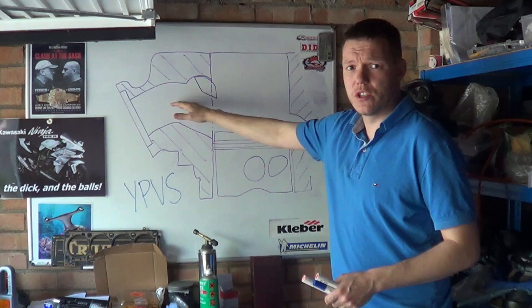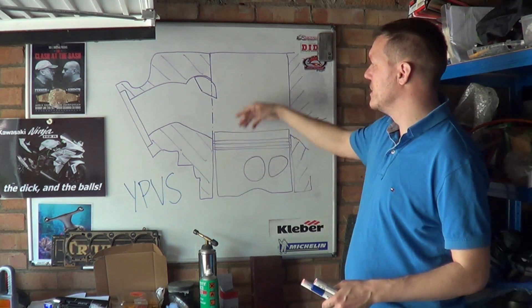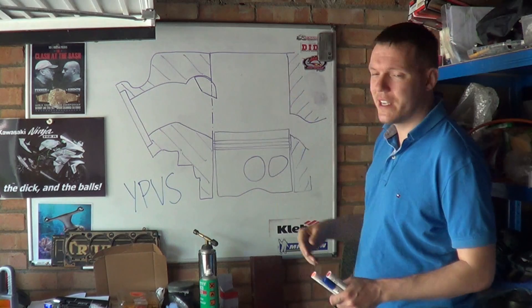So we've got a two-stroke cylinder, exhaust port, transfer and boost ports, and your piston. This is at bottom dead center, just so it's out of the way and you can see what's going on.